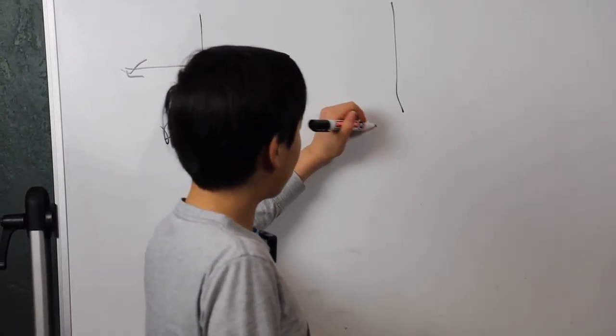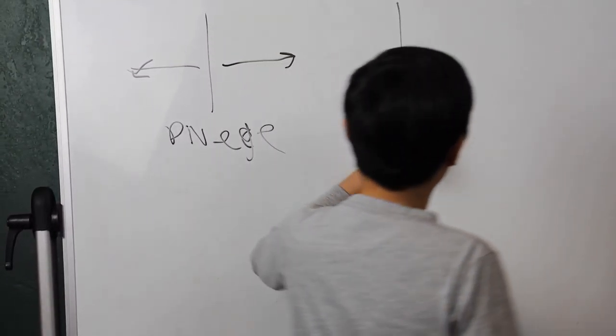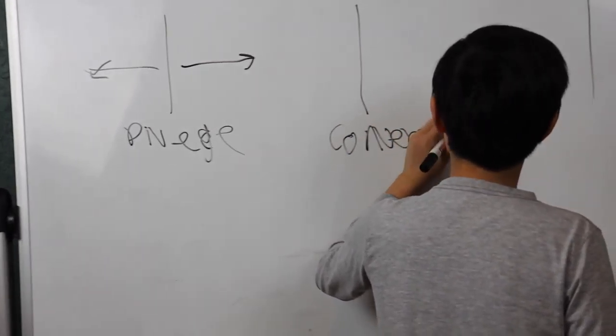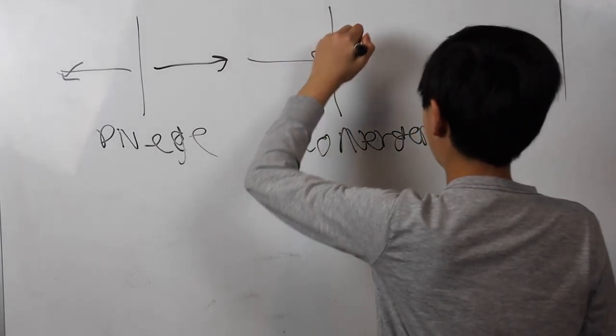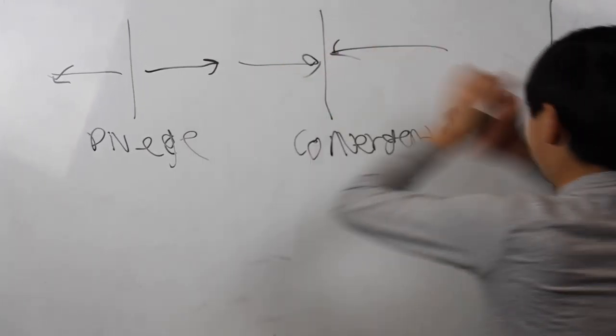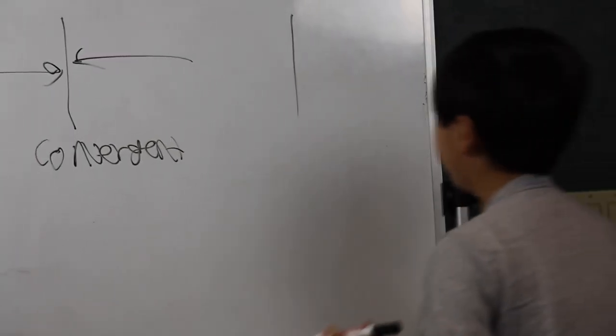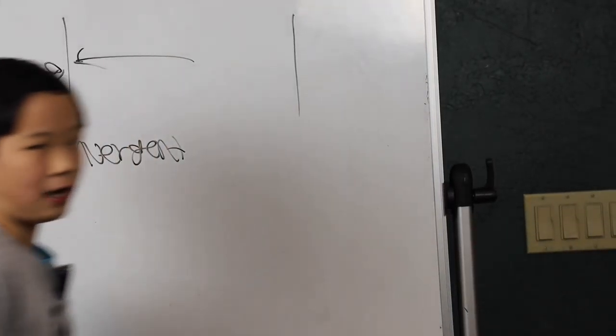Then, there's convergent plate boundaries. Convergent, converge. So, these plates, they go together, and they're like smack, smack, smack, and it makes earthquakes.